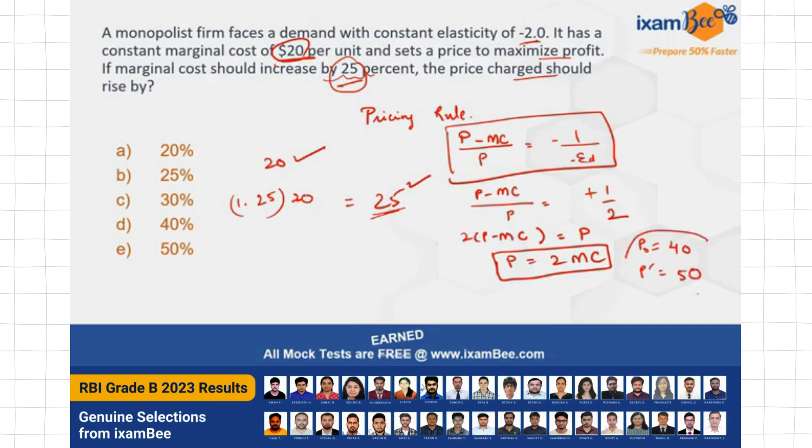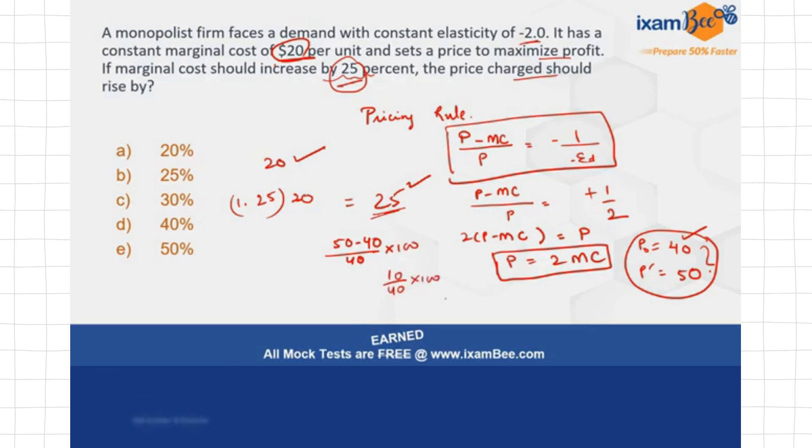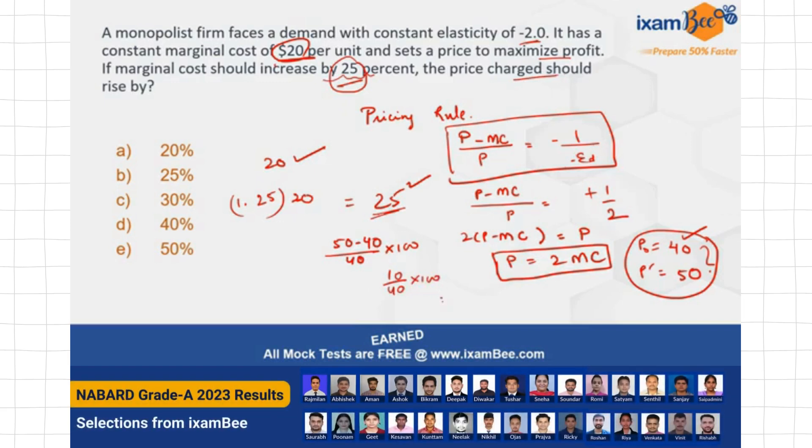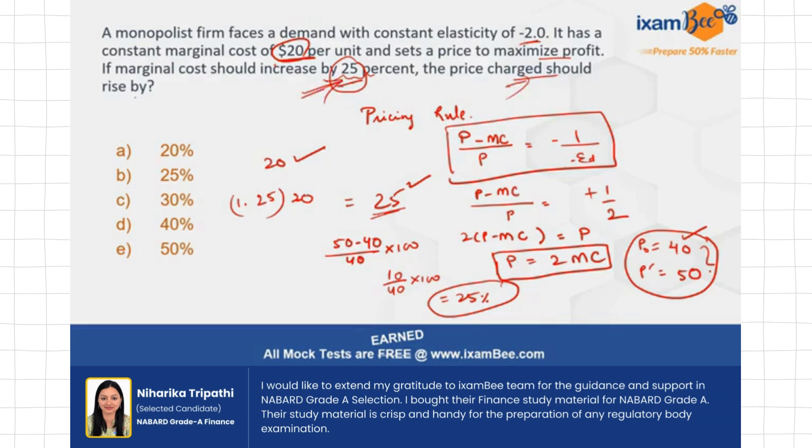So you can see here clearly by what percentage is my price increasing. How will you get that? (50 - 40) / 40, this is going to give you the percentage increase in price times 100, right? So 10 by 40 into 100, which is essentially 25%. So if your marginal cost increases by 25%, price charged should also rise by 25%. Hence, the right answer here is going to be option B.